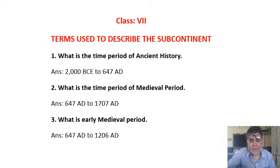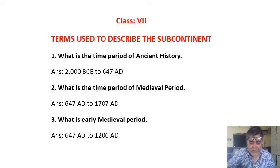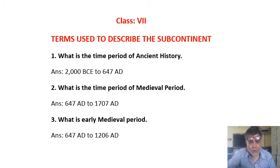What is the time period of ancient history? You know that history is divided into three portions: ancient history, medieval history, and modern history. In this class, the course is ancient history. The ancient history time period is 2000 BCE to 647 AD.